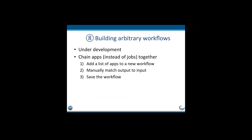The next feature we want to build is a different way to construct workflows — the arbitrary workflow method. Here, instead of running two jobs then chaining them, you add a list of apps to a new workflow and then manually match output to input. We can do some checking — for example, verifying this should be a FASTA file or a FASTQ file, to tell you if your match is not correct. Then you can save the workflow. We didn't do this initially because it's really safer to run each step, check your results, then chain them together.